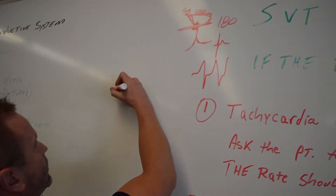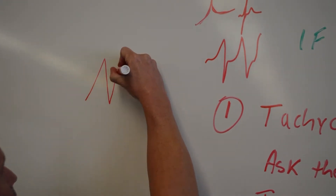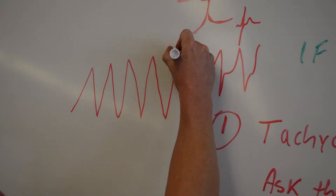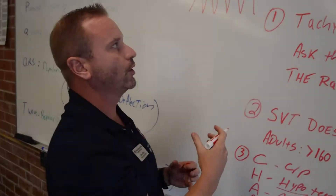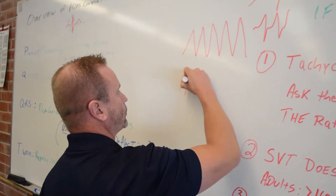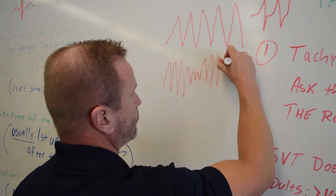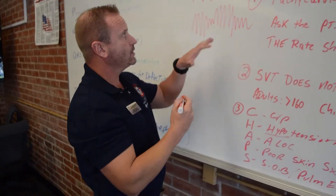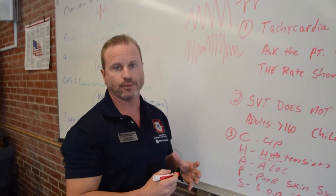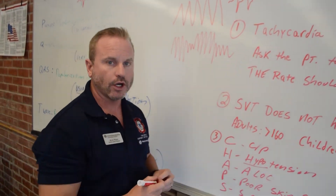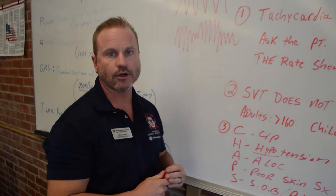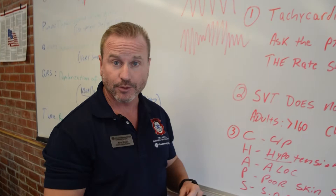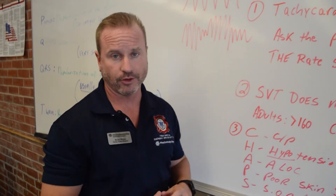Ventricular tachycardia is literally a tachycardia originating in the ventricles — it's a wide, regular complex tachycardia. There are many forms: torsades-type tachycardia, polymorphic ventricular tachycardia, or just a monomorphic tachycardia. Both can have a pulse or not. When in doubt, if you're unsure, treat it as VTAC. Ventricular tachycardia is a lethal rhythm and it precedes ventricular fibrillation, which is an absolute lethal rhythm.